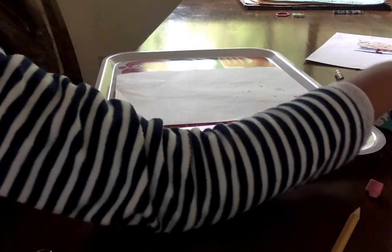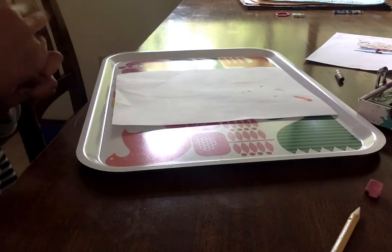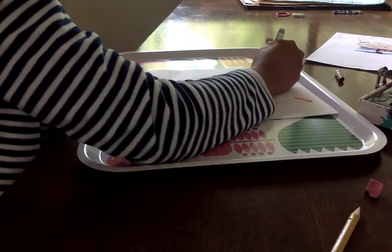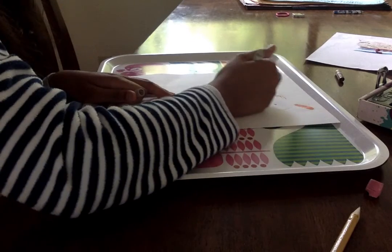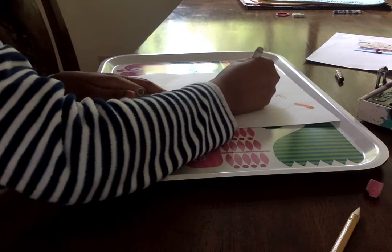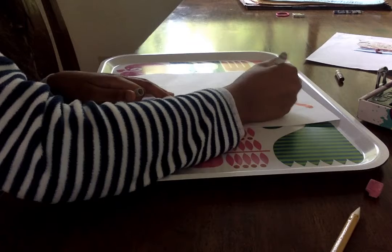Now I'm going to take my gray marker and draw some spots anywhere I want. I'm going to draw some on the mouth and across the face.